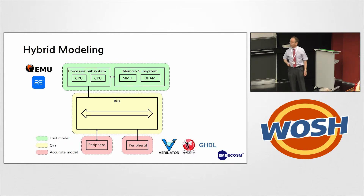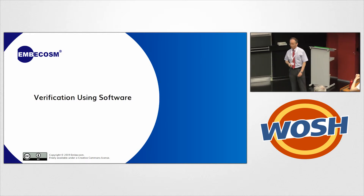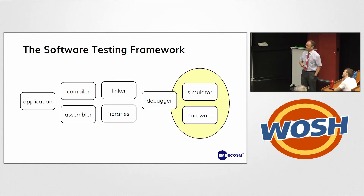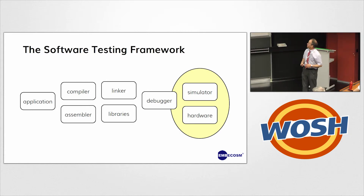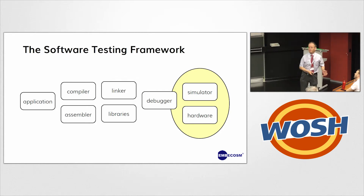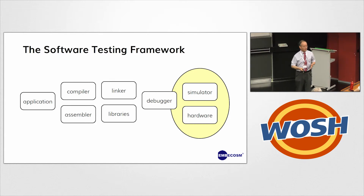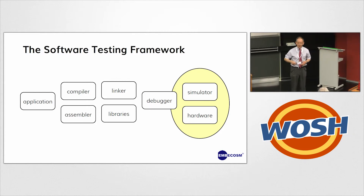So how do you verify software running on those models — whether functional verification of behaviour or non-functional verification of performance? This is the basic framework of software testing in an embedded world: you've got your application, a compiler or assembler to translate it, a linker to put it all together, libraries for extra functionality, and then your debugger. The debugger connects to the target — which could be a simulator or real hardware. Because we're pre-silicon and verifying, we use simulators. By doing that, you can run all your software and check it behaves as you want — both verification (does it do the correct thing?) and validation (is this really the product I intended to build?).